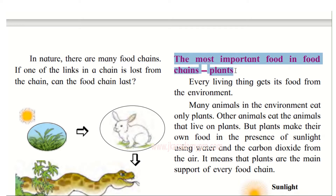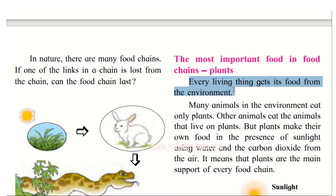The most important part of the food chain are the plants. In each food chain we saw that plants are the most important. There are animals that depend on plants, and other animals that depend on those animals. Plants are the very important source of food in all food chains, and every living thing gets its food from the environment.